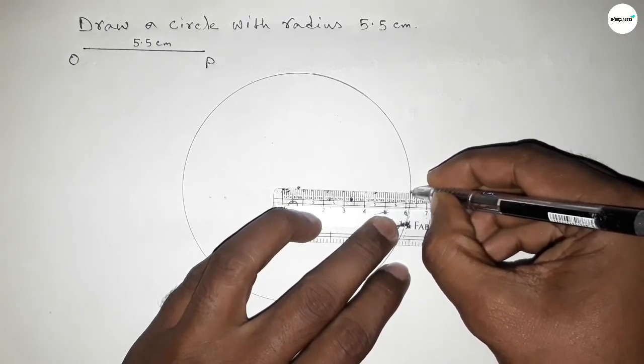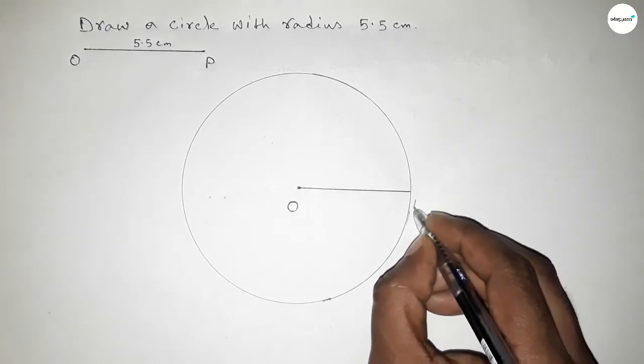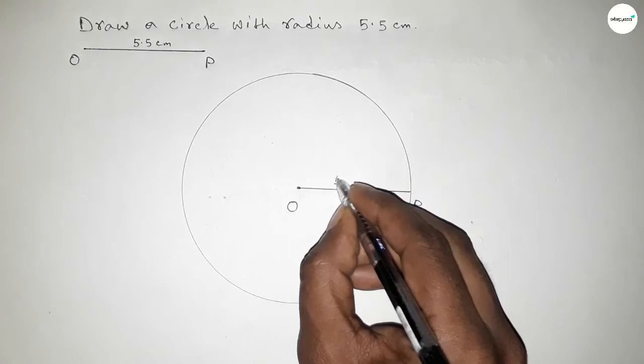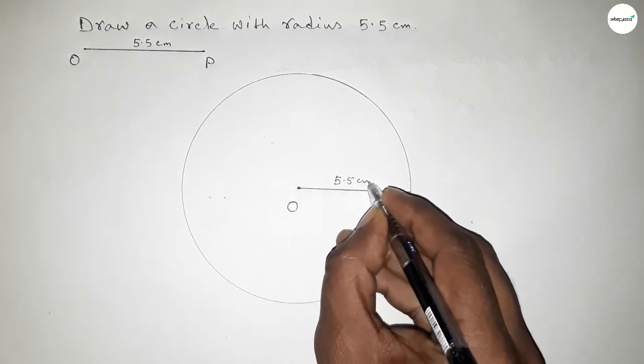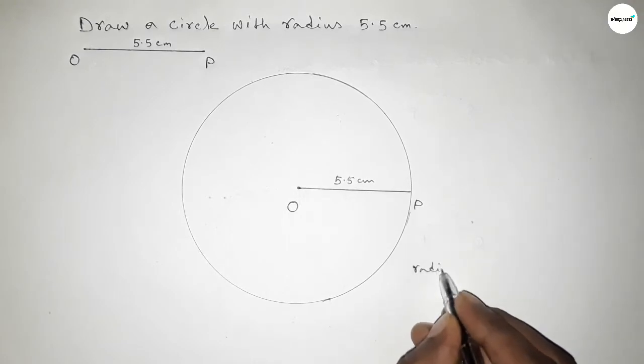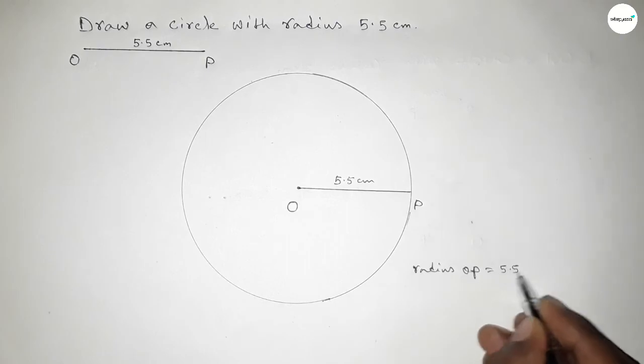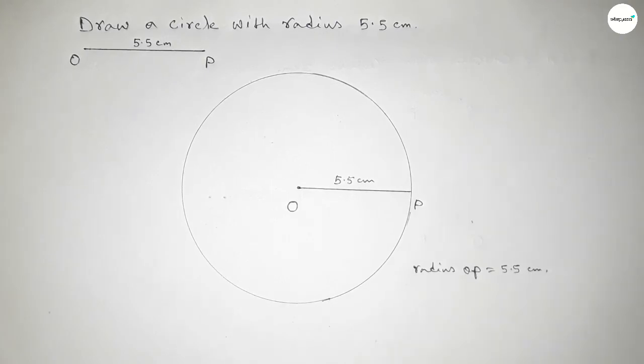So first joining this line, okay, and here this is P point. So OP equal to 5.5 centimeter. Therefore, the radius of this circle OP equals 5.5 centimeter. That's all, thanks for watching.